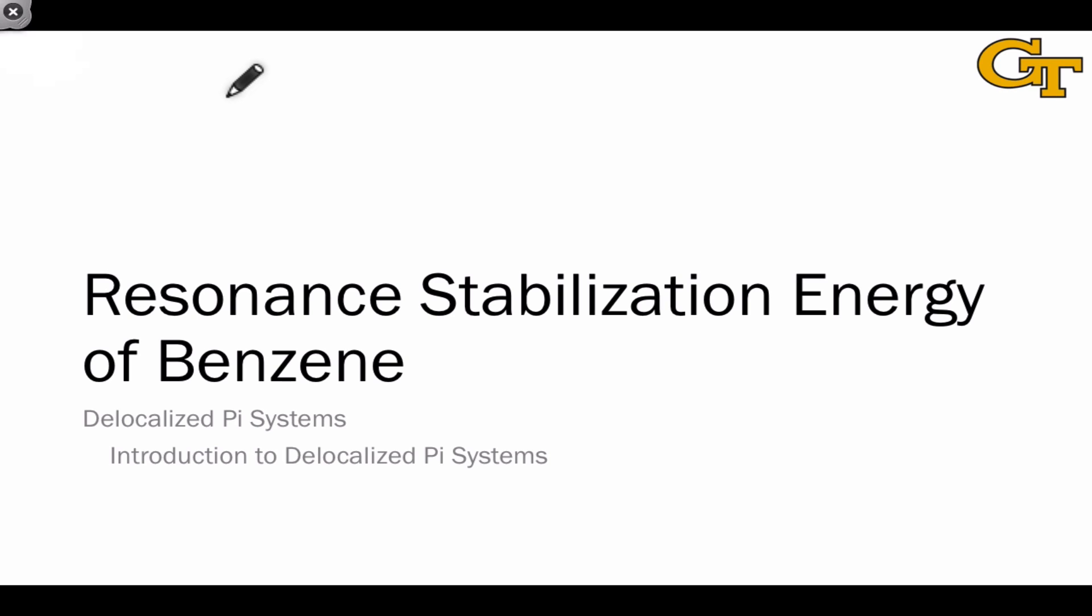Just how stable is benzene relative to, say, a hypothetical cyclic molecule lacking resonance and conjugation, or to hexatriene, a comparable acyclic molecule?